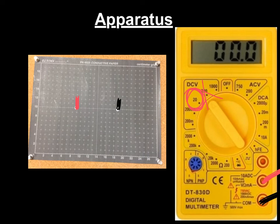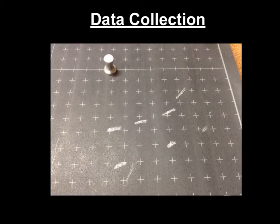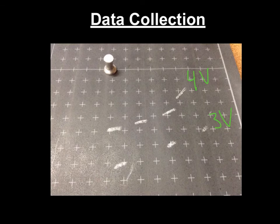You will move the pointed red wire probe around, and every time you find a place reading 5, 4, 3, 2, or 1 volts, put a little dot. Eventually you'll see a pattern and we'll connect the dots. When you're done, it looks a lot like this — you can see these would just be the dots. Let's say this is a 4-volt line and this is a 3-volt line. After you have these dots, you are going to connect the dots.